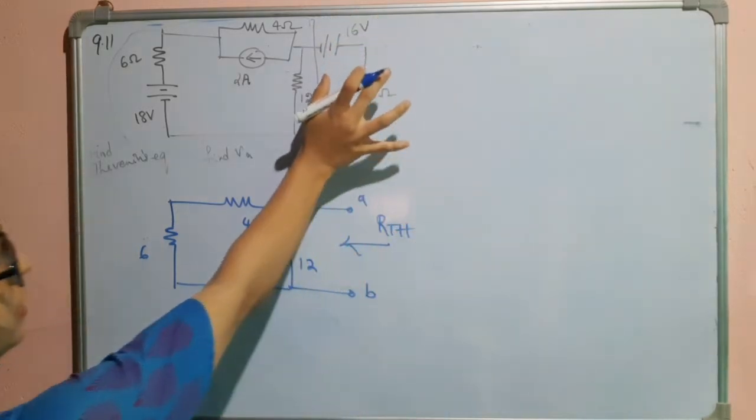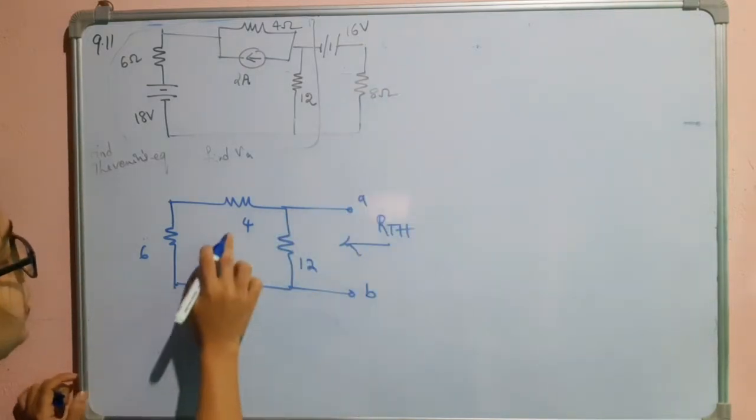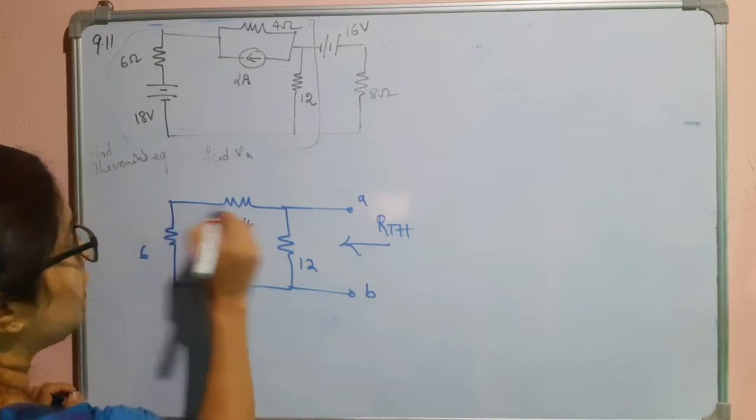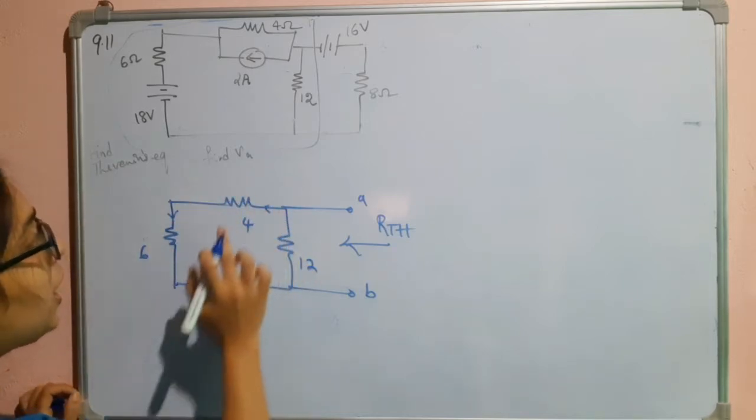Let us assume that this is the load which is connected, we will disconnect that load now. So, now here what happens, 6 plus 4 because these both are in series. You can see the same current will flow through this.